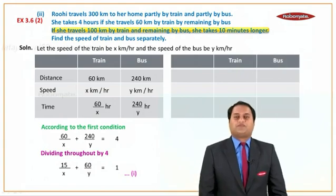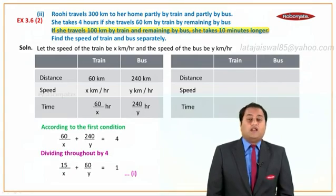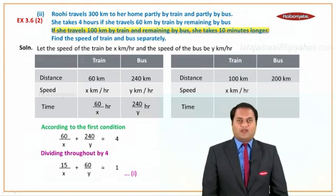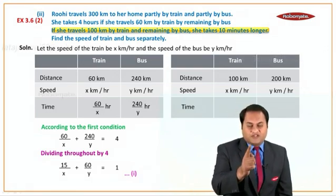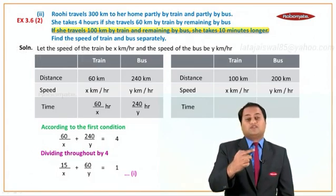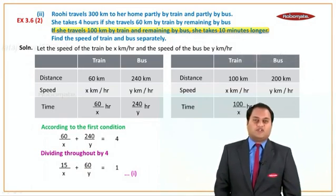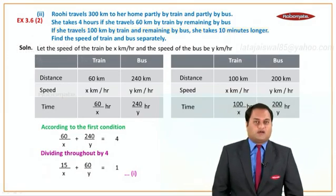Now let's see the second condition. If she travels 100 kilometers by train, then distance by train is 100 and distance by bus is 300 minus 100 = 200. Speed is X and Y respectively. She takes 10 minutes longer — that means the total time is 4 hours and 10 minutes. Let's find the individual times: time by train is 100/x hours and time by bus is 200/y hours.